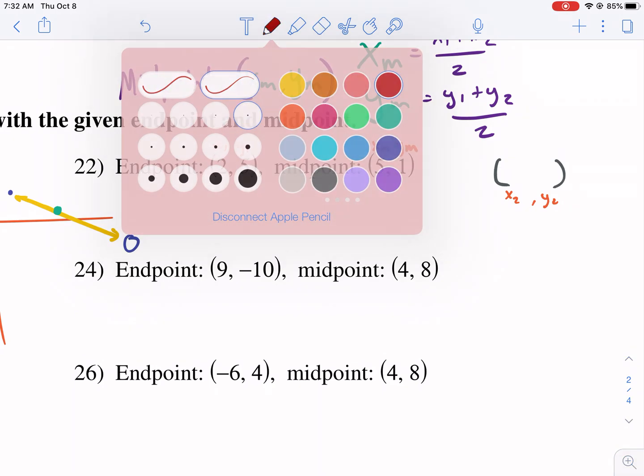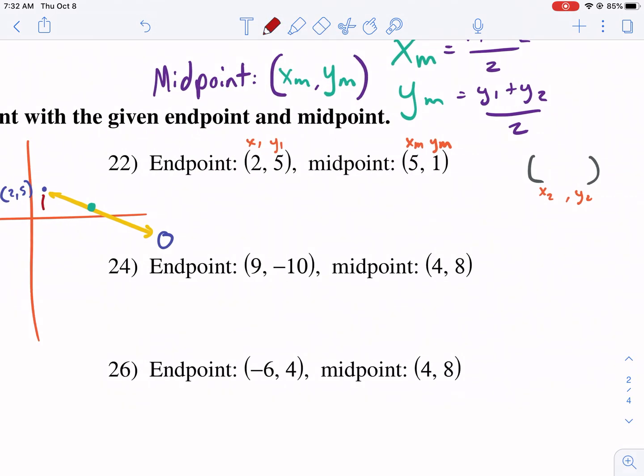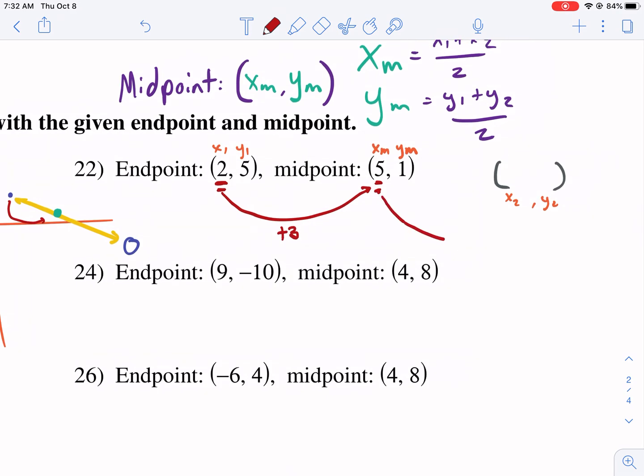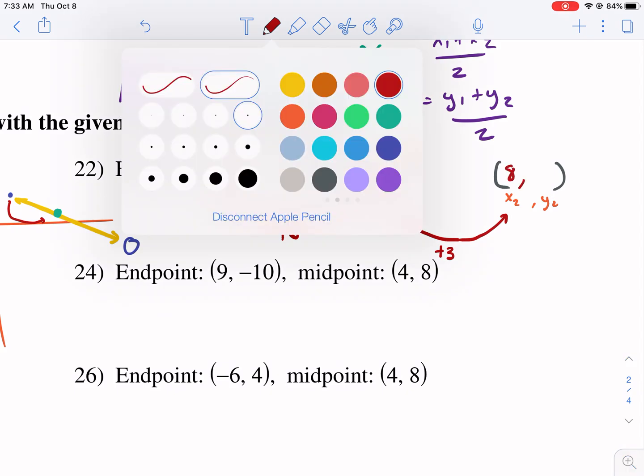Now, let's start with the X's. So our X, from here to here, our X goes from two to five. So what happened there? We added three. So to go from here to here, what do we need to do? Well, if that's truly a midpoint, then that means it needs to be the same on both sides. The length needs to be the same. So we need to add three again here, giving us eight. That's the first step.